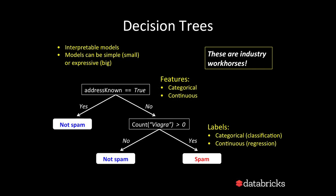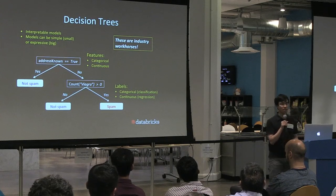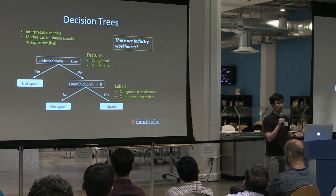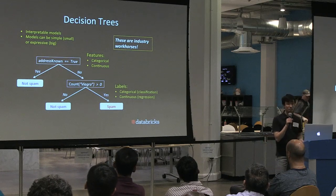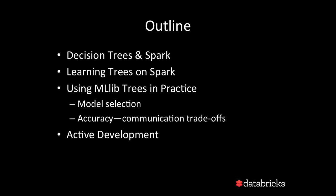Decision trees really are industry workhorses with lots of applications. The spam detection example is a bit silly, but later I'll do a demo with digit recognition. Other famous examples include the winners of the Netflix Grand Prize for Movie Recommendation, which included decision trees as part of their model. The talk outline: we'll start with quick overviews of decision trees and Spark, showing how traditional methods don't distribute well. We'll then discuss how learning trees works on Spark, covering computation, communication, and distributed constraints. Then we'll look at using MLlib in practice, with demos highlighting model selection, accuracy, and communication trade-offs. Finally, I'll mention some active development.